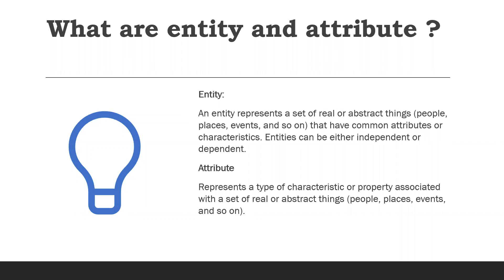What are entity and attribute? An entity represents a set of real or abstract things that have common attributes or characteristics. Entities can be either independent or dependent. An attribute represents a type of characteristic or property associated with a set of real or abstract things.